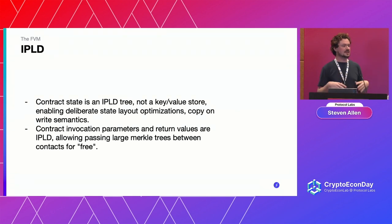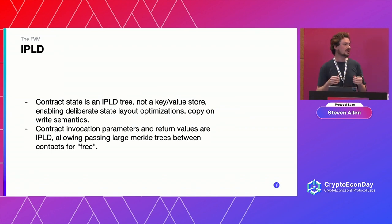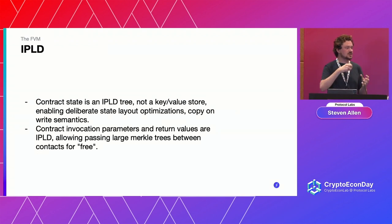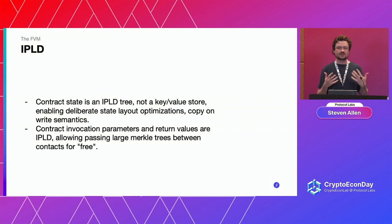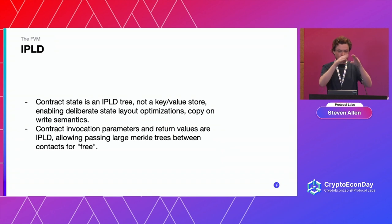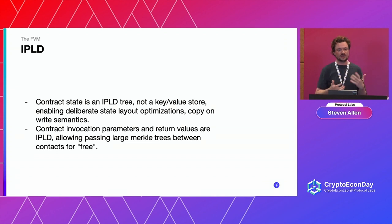In Ethereum, you store your smart contract data in a key-value store that maps 256-bit keys to 256-bit values. You can build whatever data structure you want on top of this, but you kind of need to fit your application into this funky way of storing data. With Filecoin, you can create arbitrary state trees or arbitrary Merkle trees in your state to lay out the data in the way that works for you. This also lets you take advantage of data locality and pack data together where relevant.